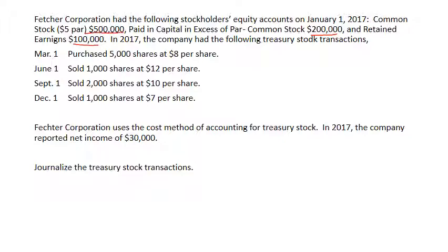If I asked you how many shares issued they have, you should be able to look at this and answer. You would look at the $500,000 of common stock and divide that by the par value of $5, and come up with 100,000 shares issued.